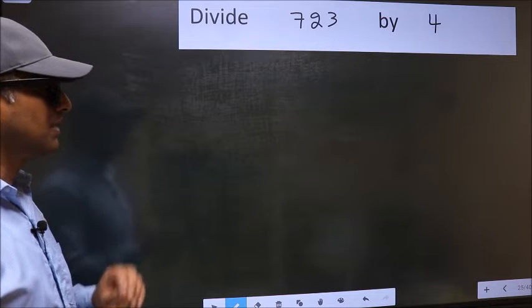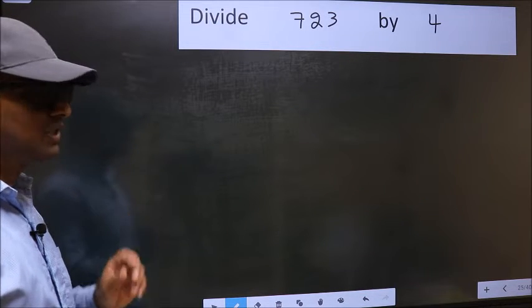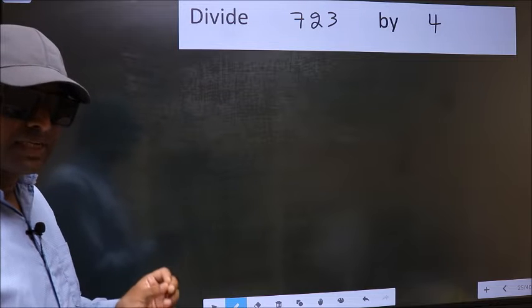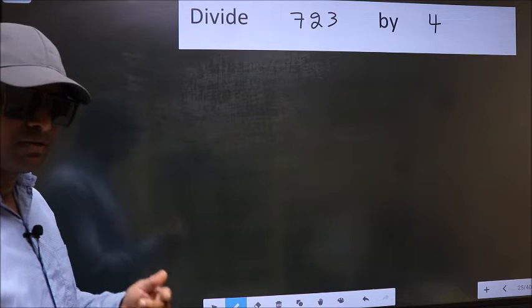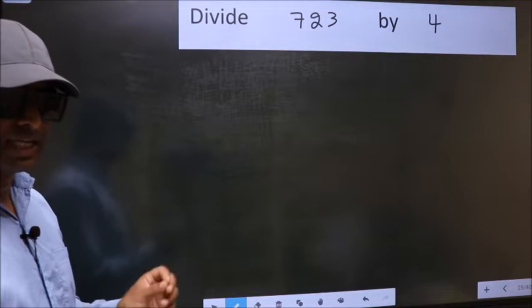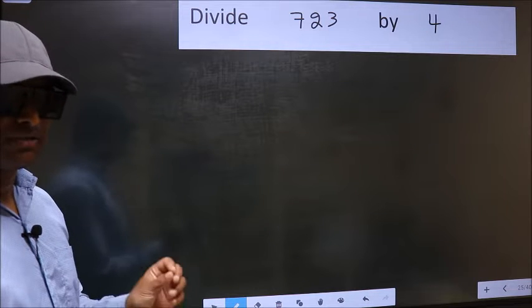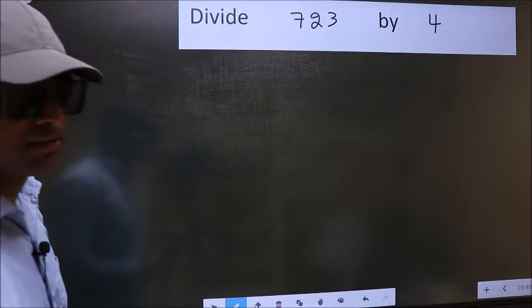Divide 723 by 4. While doing this division, many do this mistake. What is the mistake that they do? I will let you know. But before that, we should frame it in this way.